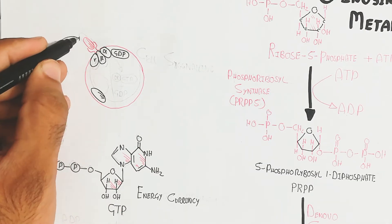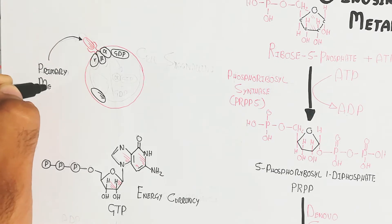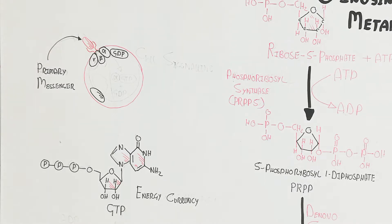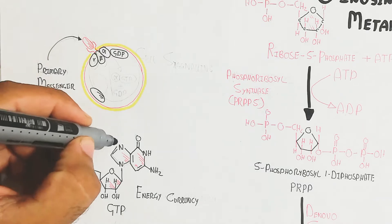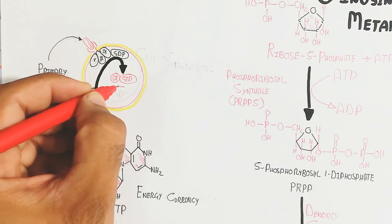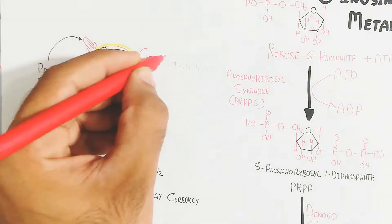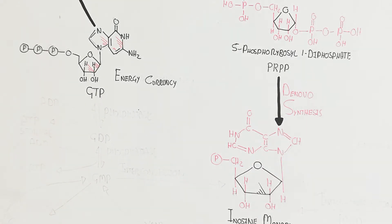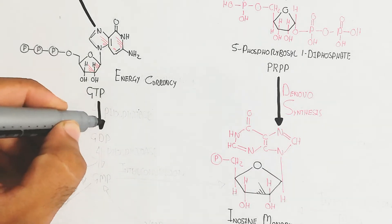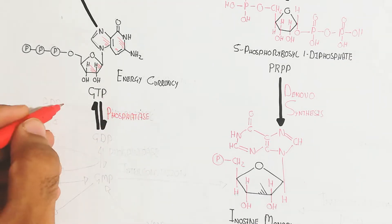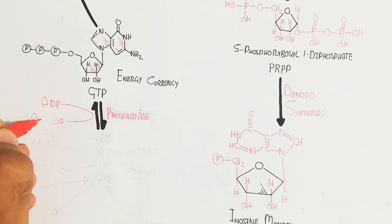GTP is used for signaling pathways in the cell. For example, when a ligand binds to a receptor, the trimeric G-protein intracellularly attached has an alpha unit containing GDP, which converts into GTP upon phosphate donation. This activates the alpha-GTP complex to activate cyclic AMP, the second messenger.